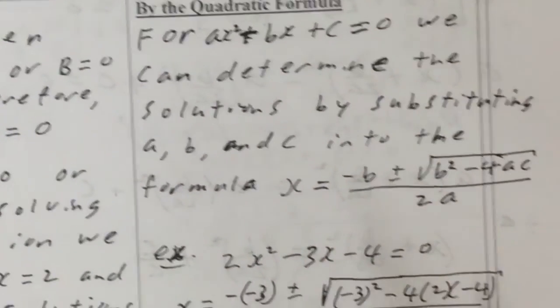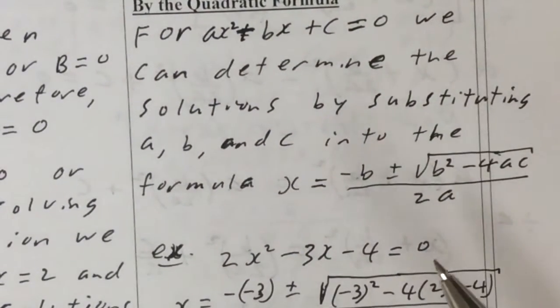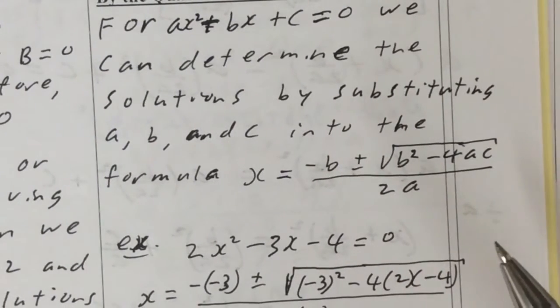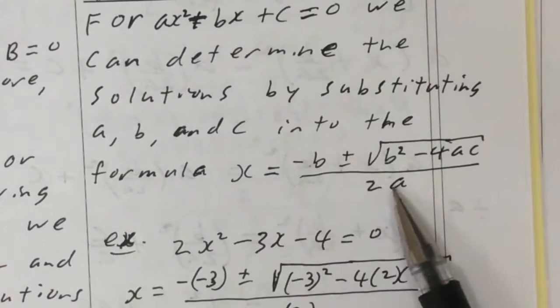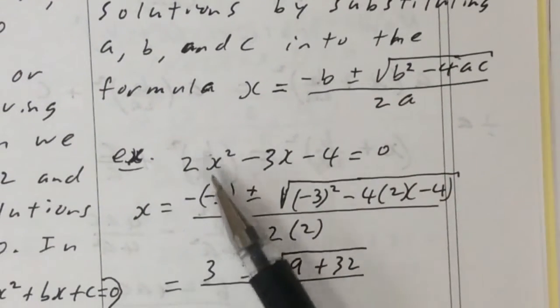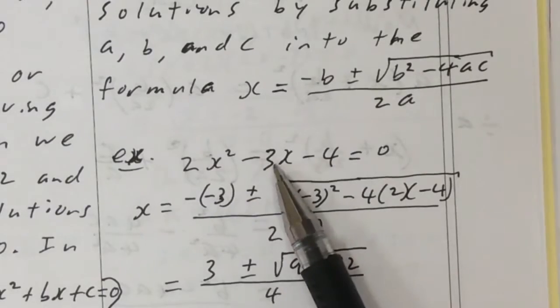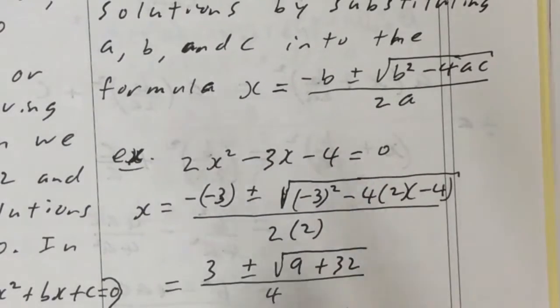So for ax squared plus bx plus c equals 0, we can determine the solutions by substituting a, b, and c into the quadratic formula, which is this. An example of this, what if you have 2x squared minus 3x minus 4 equals 0?